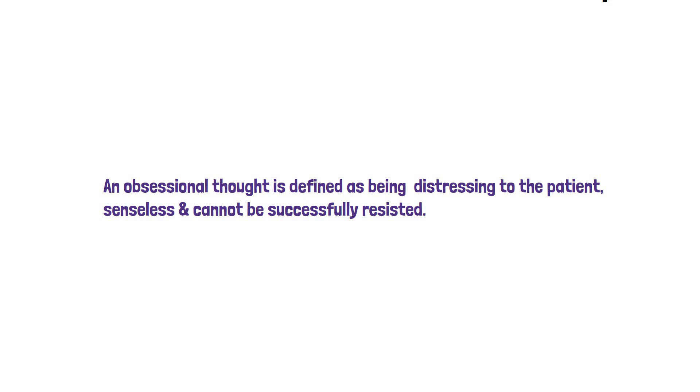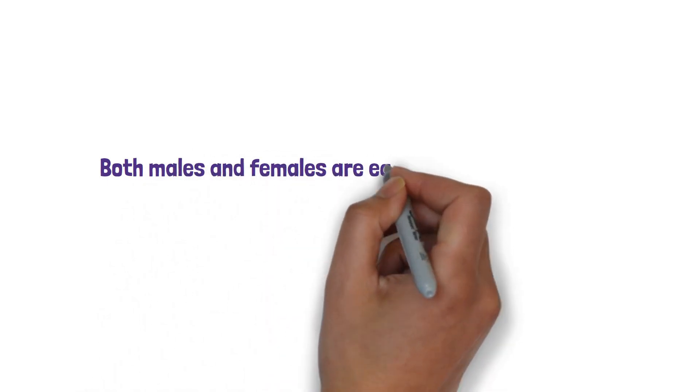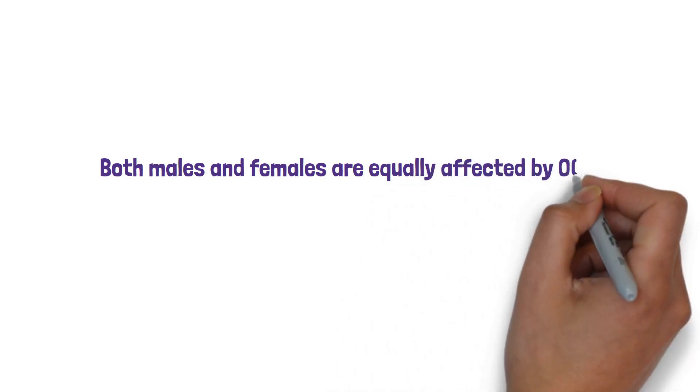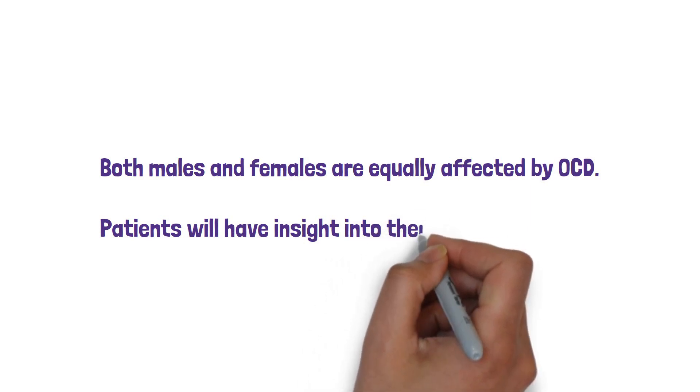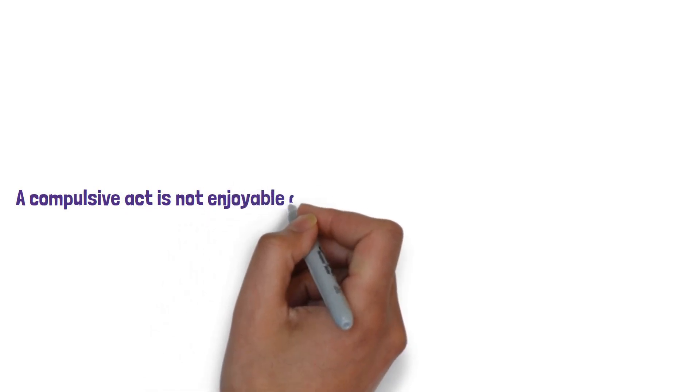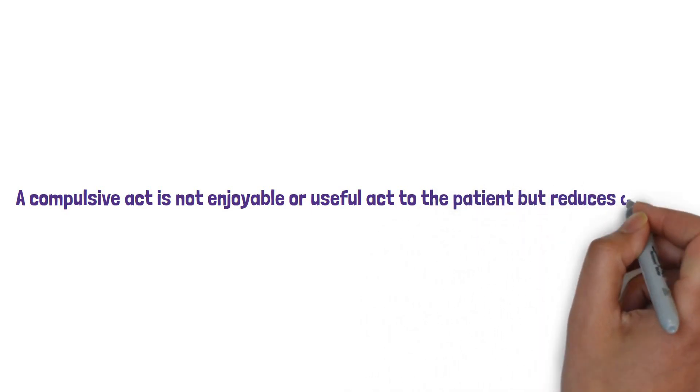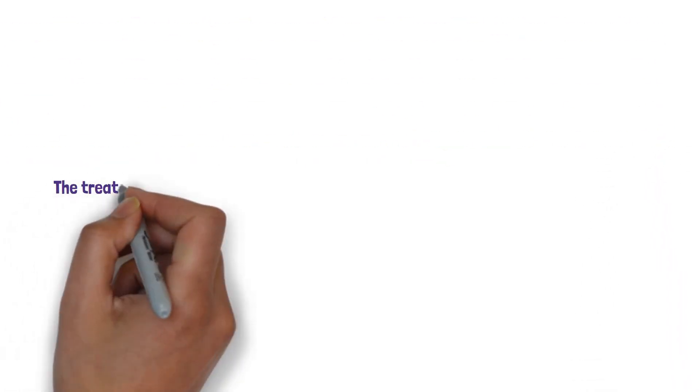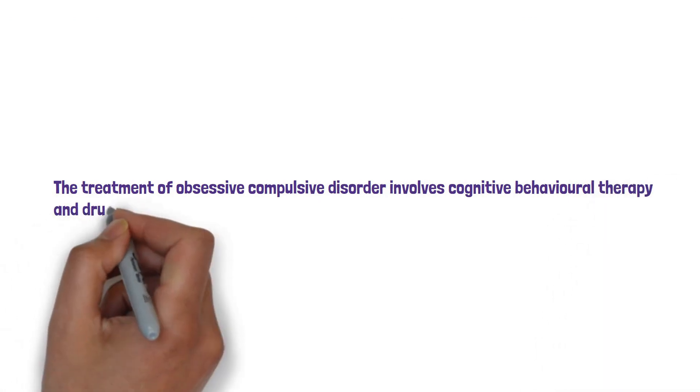So option A here is incorrect because both males and females are equally affected by OCD. And option C is incorrect as patients with OCD will have insight into their condition. In OCD it's important to know about compulsive acts. A compulsive act is not enjoyable or useful to the patient but reduces their anxiety. So in this case the patient making a cross on their hand might relieve some anxiety. The treatment of obsessive compulsive disorder includes cognitive behavioural therapy and drug therapy such as SSRIs, and a common SSRI used is fluoxetine.